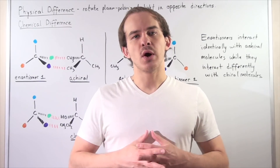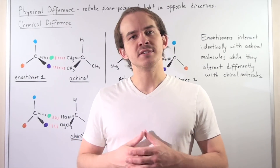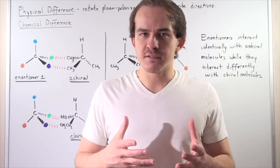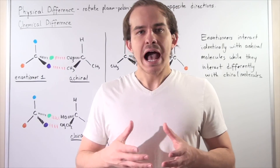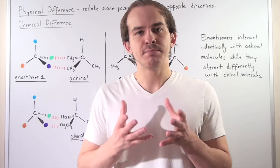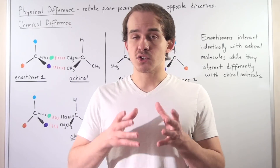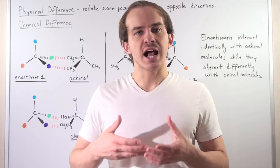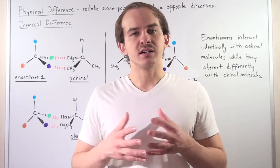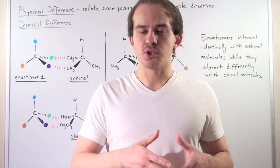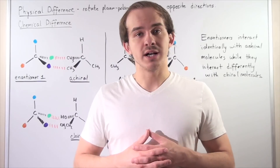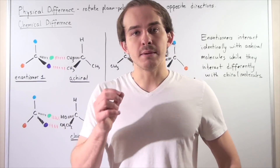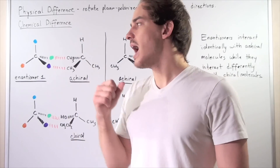In this lecture, we're going to continue our discussion on the various differences that exist between our pair of enantiomers. We already said that there is a physical difference between our pair of enantiomers — our pair of enantiomers rotate plane polarized light the same amount of degrees but in opposite directions. For example, if the R enantiomer rotates plane polarized light in the clockwise direction, our S enantiomer will rotate that light in the counterclockwise direction.